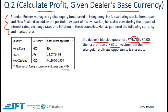Step number one is always calculating the implied interbank offer rate. We need the Japanese yen to New Zealand dollar rate. We can save a little time: since we are only given the bid-side quote on the dealer side, to determine whether there's an arbitrage profit we compare it with the interbank offer rate. So we just need to calculate the interbank offer rate for Japanese yen to New Zealand dollar.